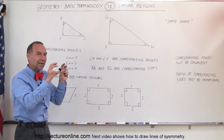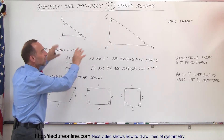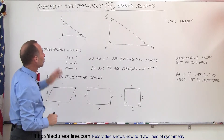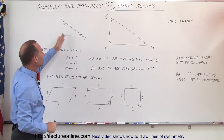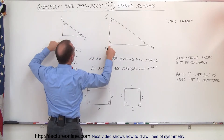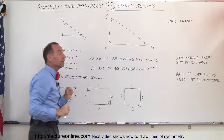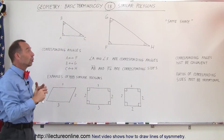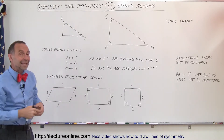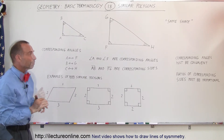Corresponding means that they're situated in the same location with respect to the figure we're looking at. Notice there are three sides and three angles. If those angles are corresponding and congruent, we have a good chance that we're looking at the same shape.